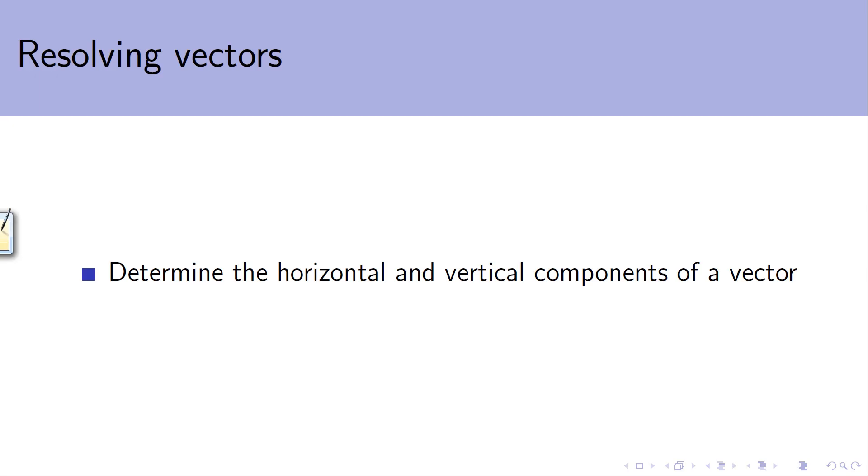Having previously looked at how we can take two perpendicular vectors and combine them to work out one overall equivalent vector, we're now going to do the opposite thing. We're going to take one vector, some magnitude acting in some direction, and work out two perpendicular components. We're going to break it down into horizontal and vertical components of that vector.